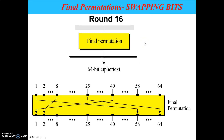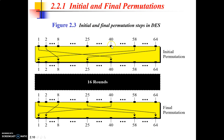Now let's talk about final permutation. In the case of final permutation, the output of round number 16 is going to be sent as input to the final permutation. The output of final permutation is going to be your 64-bit cipher text. As shown in the yellow block at the bottom, the output of round 16 has its bit positions shuffled across these 64 bits. Finally, you will have 64 bits — this is your final cipher text — which is going to be transmitted to the receiver.